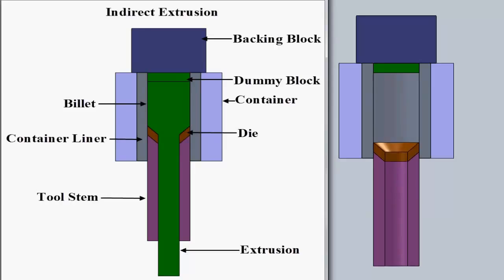The operation is marked by no relative displacement between the containing die and the billet, so there is no friction involved between them. This greatly improves the external surface finish of the finished product. Because the billet moves with the container, the frictional forces are eliminated.